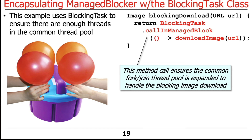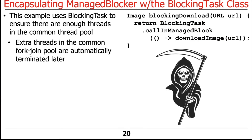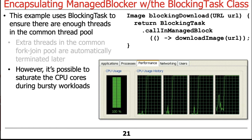That'll basically expand the number of threads in the pool by one to handle that download. The extra threads in the common ForkJoinPool are automatically terminated later — if they're not used for a while, they'll be reaped. There is a downside with this approach, and really with using ManagedBlocker in general. It's possible to saturate the CPU cores during bursty downloads or workloads by spawning too many threads. There is ultimately a limit that the Java ForkJoinPool puts on the number of threads in the common pool — it won't grow infinitely without bound.